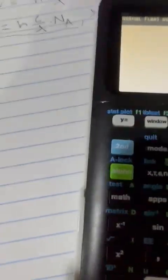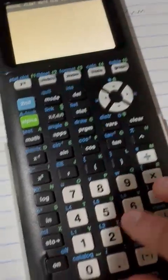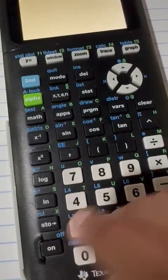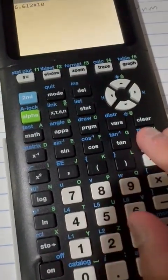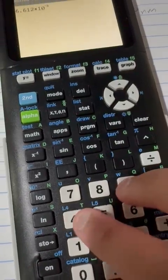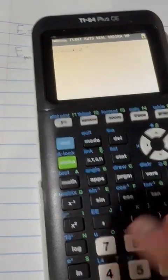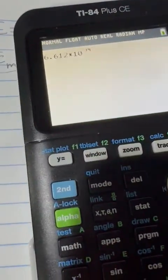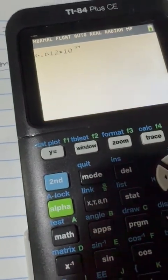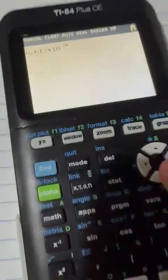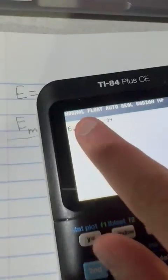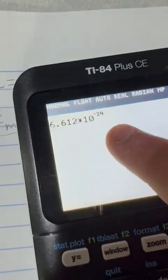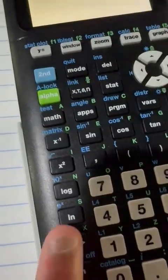First we need H, Planck's constant, which is 6.612 times 10 to the negative 34. Now, instead of writing this number each time, what we can do is we can store it to a specific value. The way we do this is we first write the value here, then click the store button.